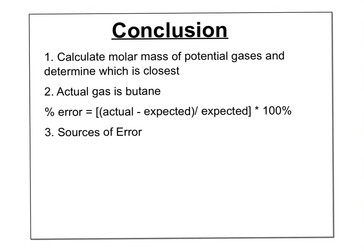For the conclusion questions: calculate the molar mass of each given gas and determine which is closest — show your work as evidence. The actual gas in a lighter is butane, so we'll see how close my data gets. You'll also calculate percent error: (calculated molar mass − molar mass of butane) ÷ molar mass of butane × 100, and identify possible sources of error explaining why your calculated value was higher or lower than butane's actual molar mass. Good luck!